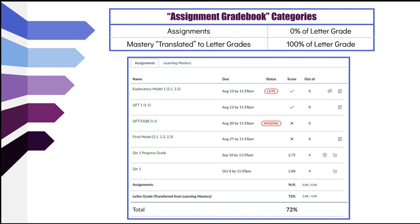If you don't do the assignments, you won't be able to demonstrate mastery. The second category is where your mastery from the Learning Mastery Gradebook will be converted into points, which will go on your report cards and transcripts. Each time your mastery is assessed, the scores on the four-point scale are averaged using the decaying average, where your most recent score counts more. This category is worth a hundred percent of your letter grade, and the assignments are worth four points, which is the top of the mastery scale.